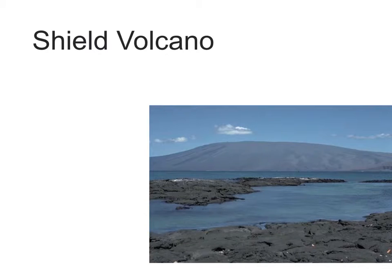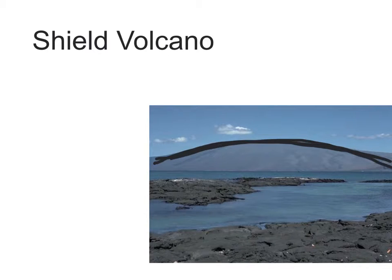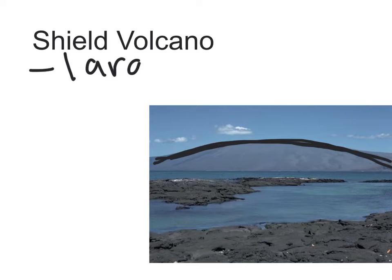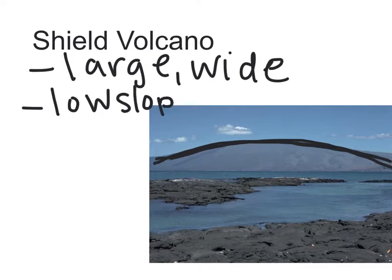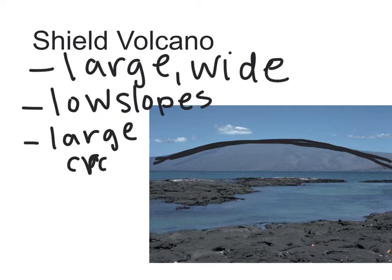Next we have the shield volcano. If you look at the shape of a shield volcano, it reminds me of a warrior's shield — like what old-time men used to hold in front of them to protect themselves. A shield volcano is very large and very wide, with low slopes, which means it's not steep. It's more like a little hill, and there's usually a large crater at the top.